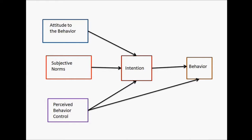In this model, we have five observed variables: attitude to behavior, subjective norm, perceived behavior control, intention, and behavior. Attitude and subjective norm influence intention, and perceived behavior control influences intention as well. There is no direct relationship from attitude to behavior, and subjective norm also has no direct impact on behavior — both have indirect impact. But perceived behavior control has a direct impact on behavior.